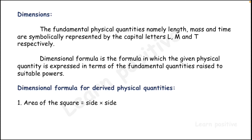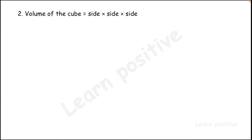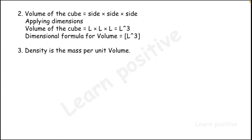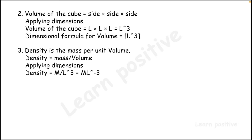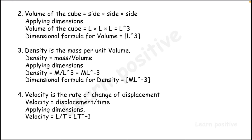The dimensional formula of area is L². For volume of a cube — side × side × side — the dimensional formula is L³. Density equals mass divided by volume, so the dimensional formula is M divided by L³, that is M·L⁻³. Velocity equals displacement divided by time, so the dimensional formula is L divided by T, that is L·T⁻¹.